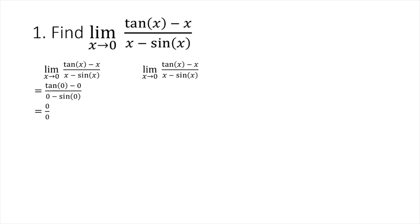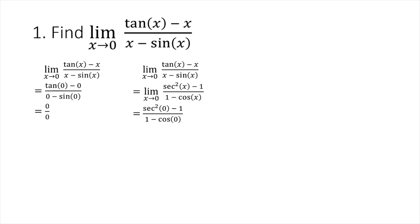According to L'Hôpital's Rule, to evaluate a limit in the form zero over zero, we differentiate the numerator and denominator separately. The derivative of the numerator, tangent x minus x, is secant squared x minus 1, since the derivative of tangent x is secant squared x and the derivative of x is 1. The derivative of the denominator, x minus sine x, is 1 minus cosine x. Evaluating at x equals zero: secant squared of zero minus 1 gives 1 minus 1, which is 0, and 1 minus cosine of zero gives 1 minus 1, also 0. So it's still an indeterminate form, zero over zero.